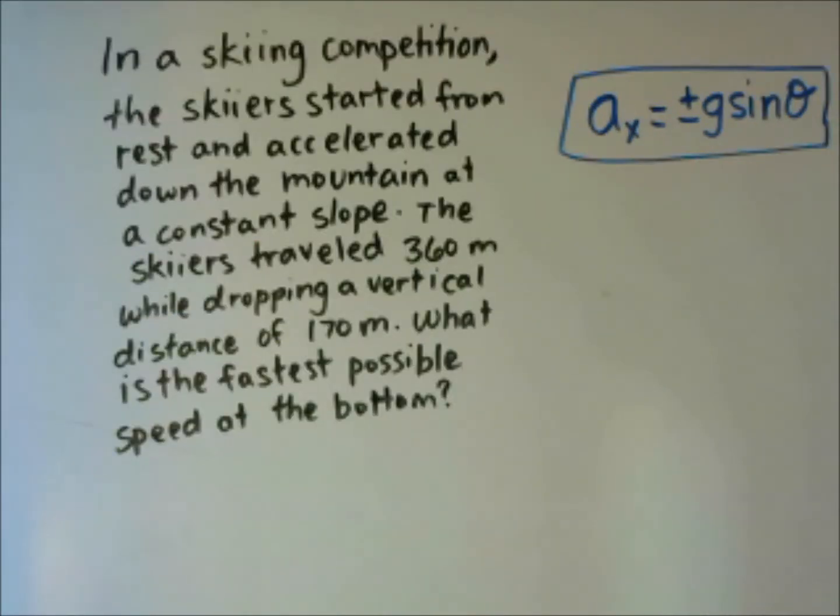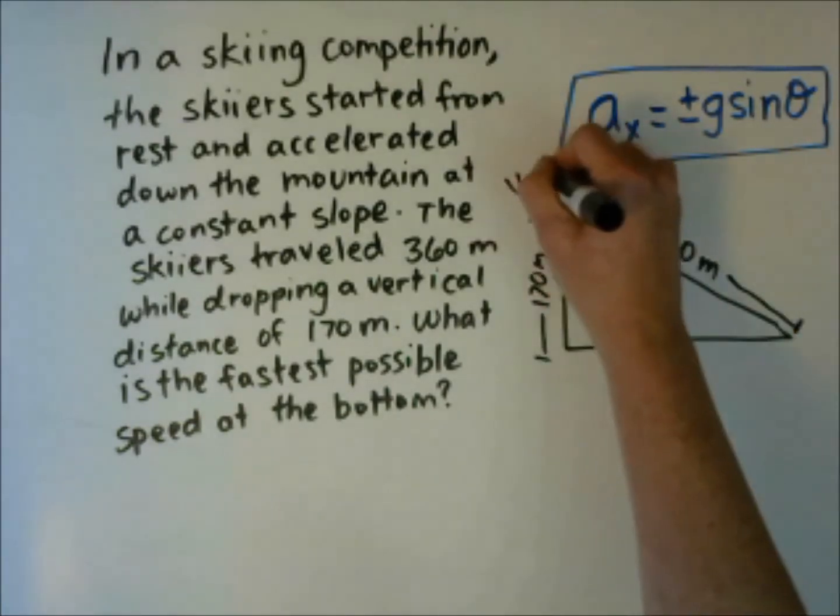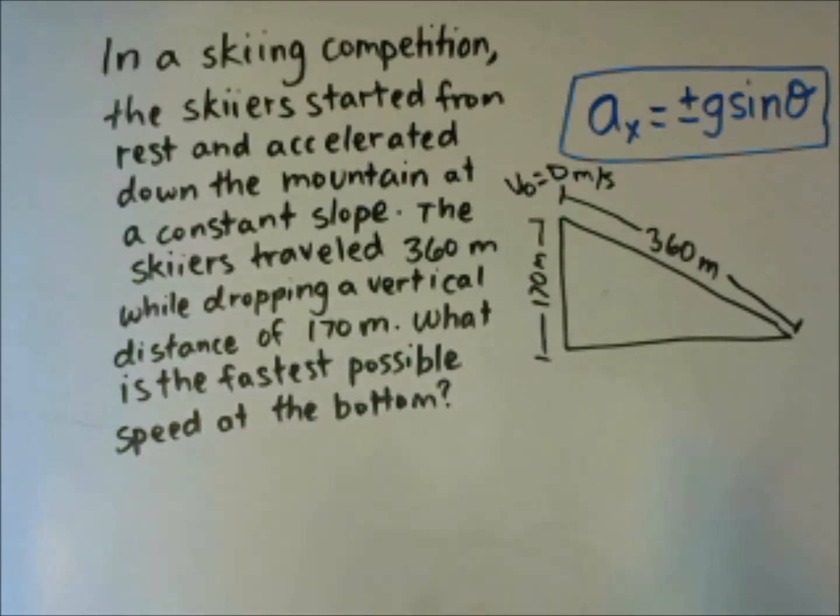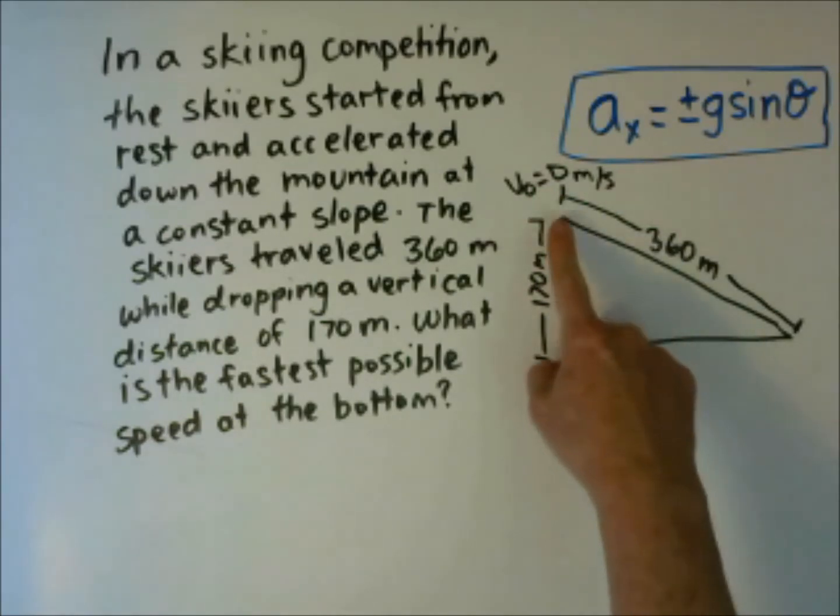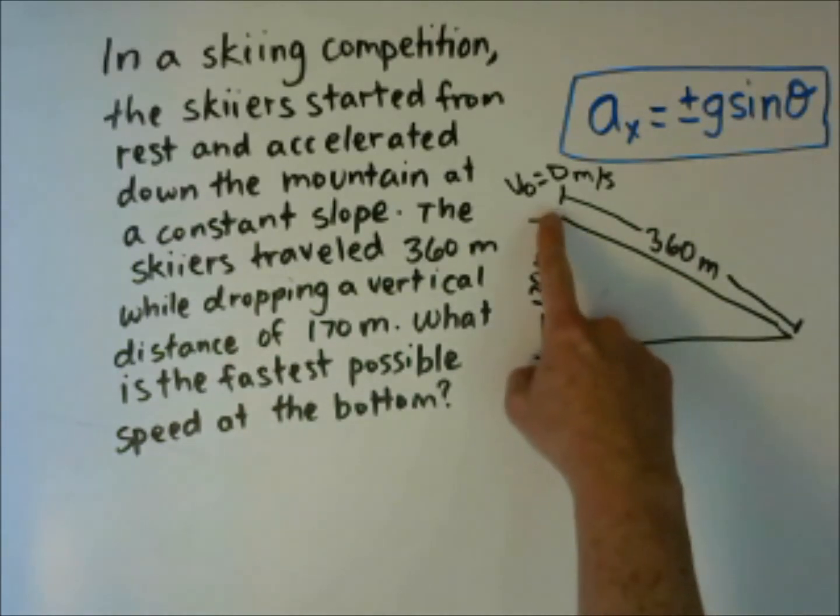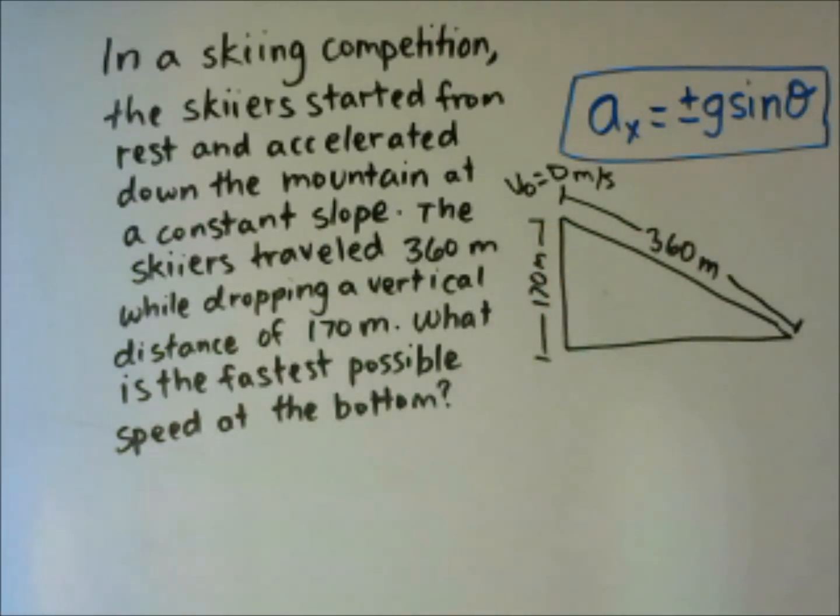Let's consider a problem. In a skiing competition, the skiers started from rest and accelerated down the mountain at a constant slope. The skiers traveled 360 meters while dropping a vertical distance of 170 meters. What is the fastest possible speed at the bottom? Let's start with the picture. This picture shows the skier starts at the top at an initial velocity of 0 meters per second. They are going to travel down a slope a distance of 360 meters, but we know the height change will be 170 meters.